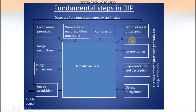However, some steps here — such as morphological processing — give attributes to represent the shape present in an image. Segmentation segments a region of interest from an image. For example, if you have a flower in a green background, segmentation extracts attributes that represent the shape of the flower.